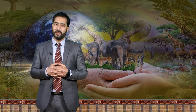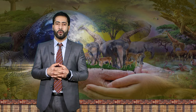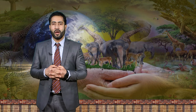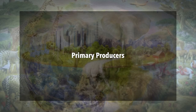Photosynthesis can be simplified in this equation: carbon dioxide plus water produces food (C6H12O6) plus oxygen and water. Photosynthesis is a process in which carbon dioxide, water, and light energy are utilized to synthesize an energy-rich carbohydrate like glucose and to produce oxygen as a byproduct. Structurally, plants and algae have light-harvesting cellular structures called chloroplasts, which contain photosynthetic pigments — i.e., chlorophyll — that can absorb light energy.